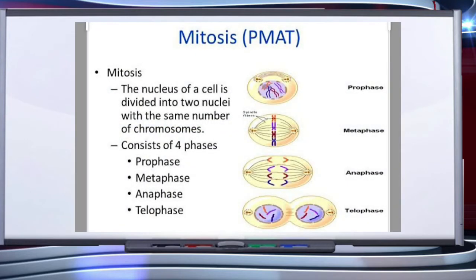Mitosis is the most dramatic period of the cell cycle, involving a major reorganization of virtually all components of the cell. Since the number of chromosomes in the parent and progeny cells is the same, it is also called equational division. In mitosis, the nucleus is divided into two nuclei with the same number of chromosomes. Mitosis is divided into four stages: prophase, metaphase, anaphase, and telophase.